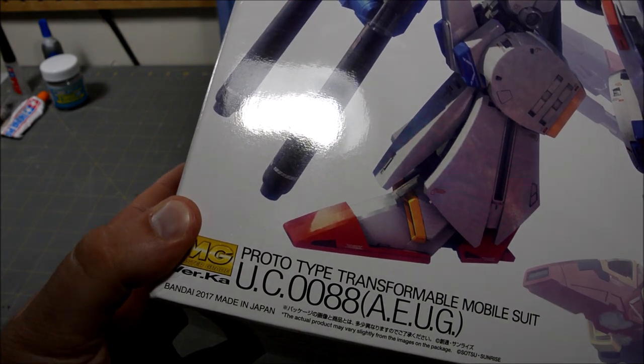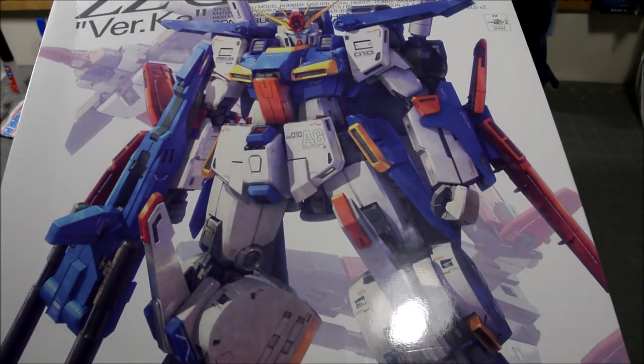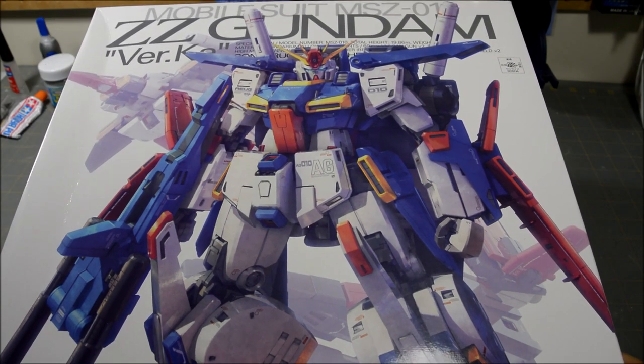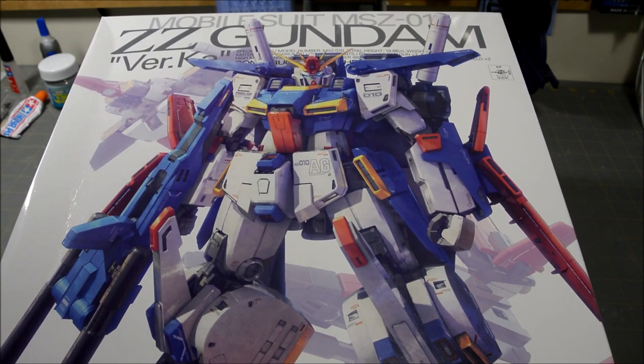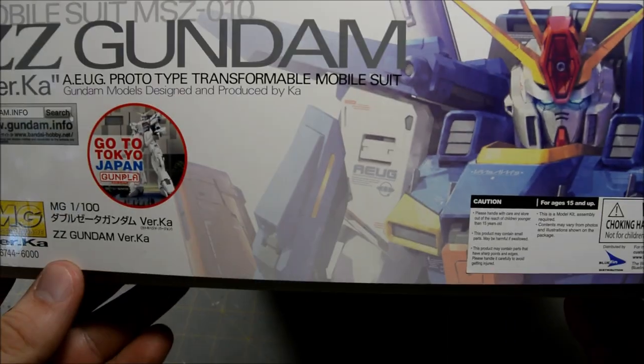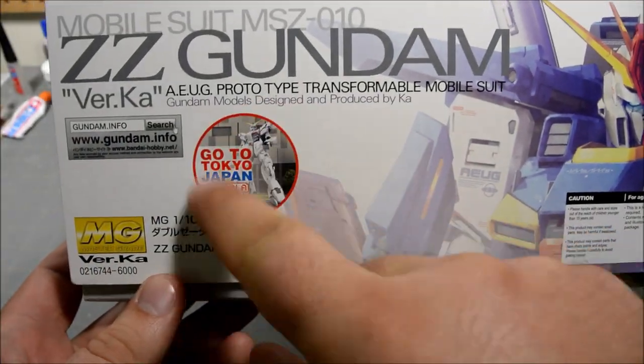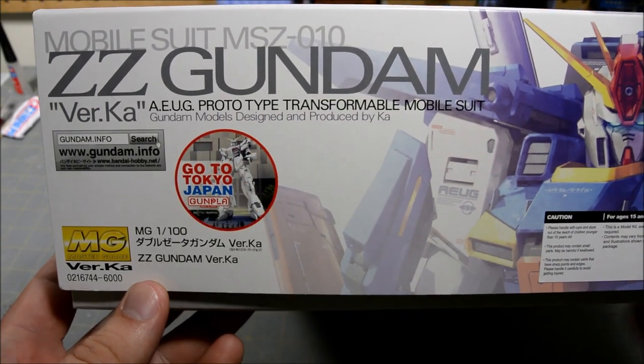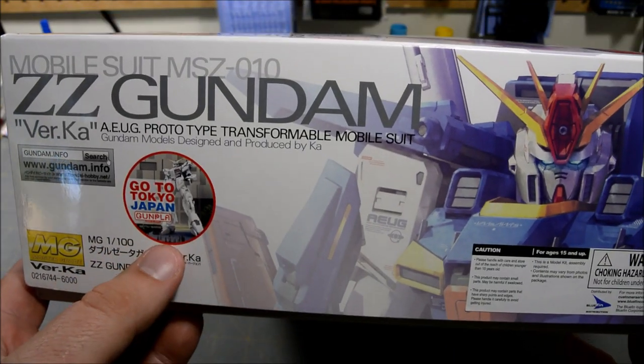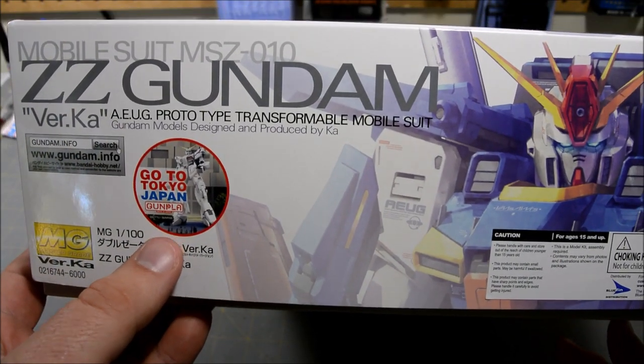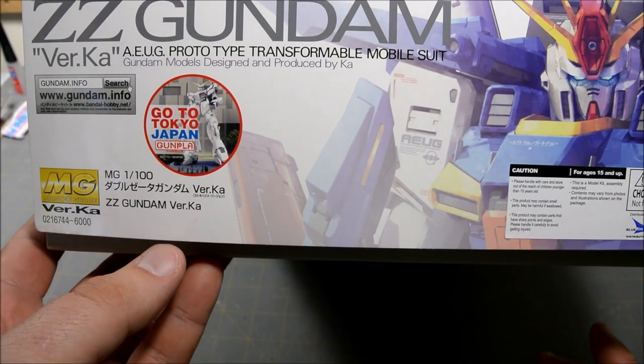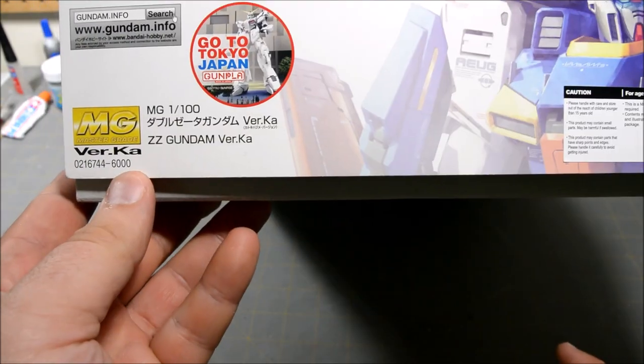Your typical Kotobukiya box art with white background. This is in the middle of their mid-year campaign for Gundam.info where they have prizes and stuff. 6,000 yen is the retail price.